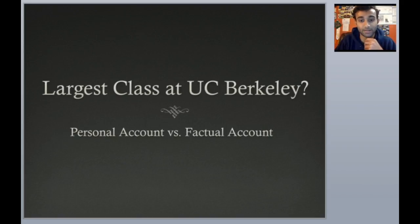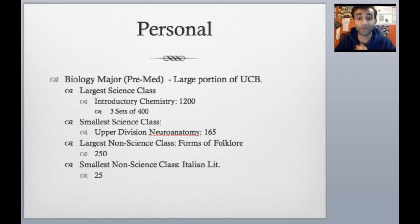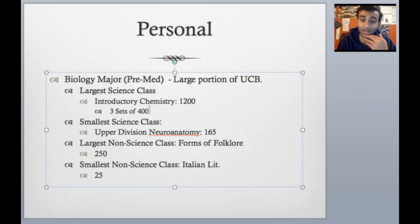Let's talk about personal experience. I was a biology major. There's a lot of biology majors at UC Berkeley, specifically focusing on the pre-med emphasis. And even if you don't consider pre-med, biology in general as a major is vast. My largest science class was this introductory chemistry course I took in my first semester. If you added up the total number of students in that class, it was 1,200, but because there was only a lecture hall that doesn't really fit that many people, we had three sets of 400 people each.